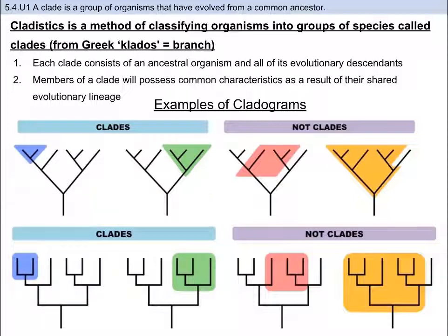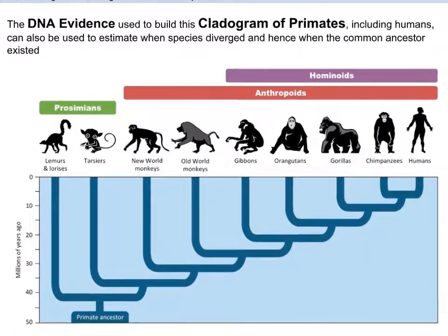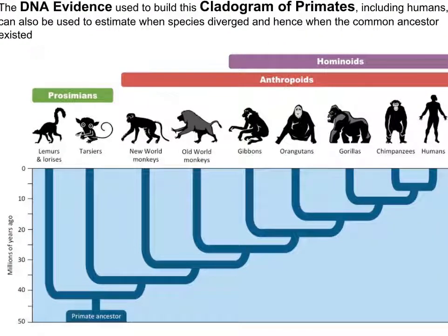Let's explore an actual cladogram based on actual DNA evidence, where we can even produce an estimated timeline of divergence. Here is a cladogram of primates. You can see the relationship between different groups, and on the y-axis you see the timeline in millions of years ago. We know enough about DNA to know roughly how long it takes for changes in genetic code to occur, so we use our math skills. Whether it was 40 or 41 million years ago doesn't really matter — the point is to give you the general idea.